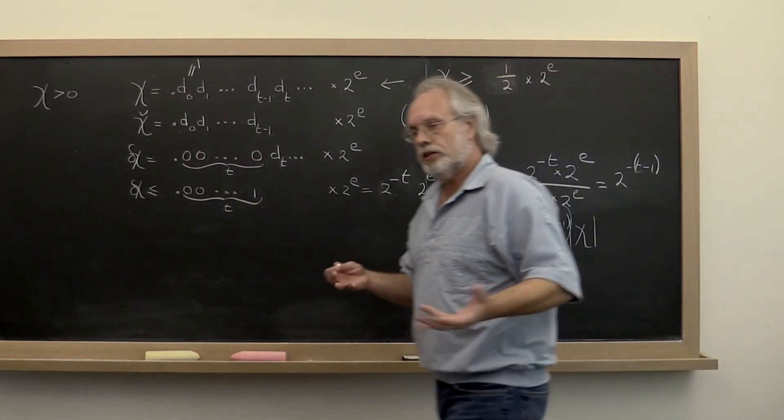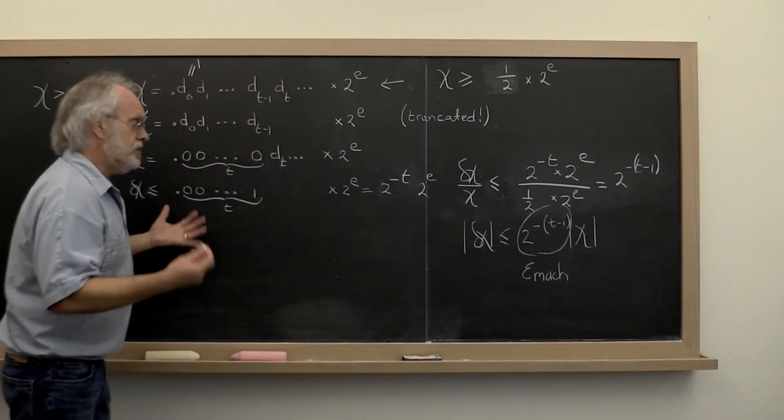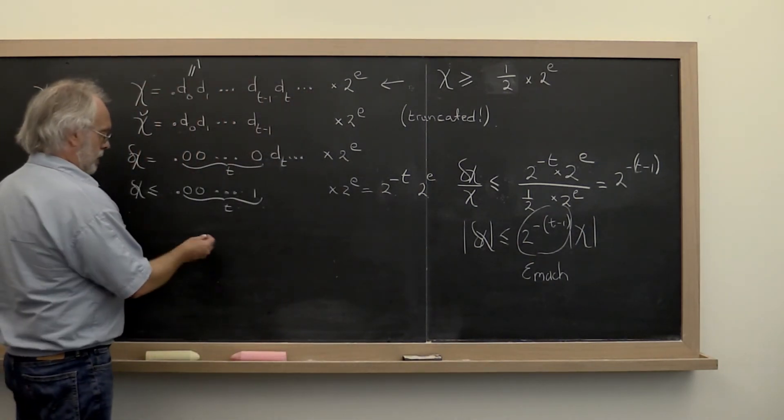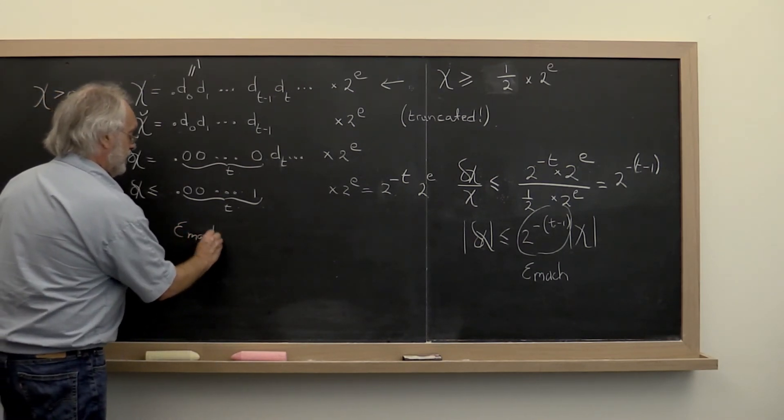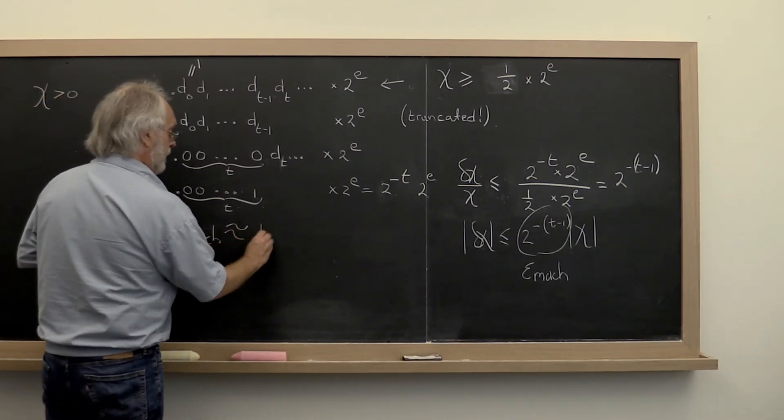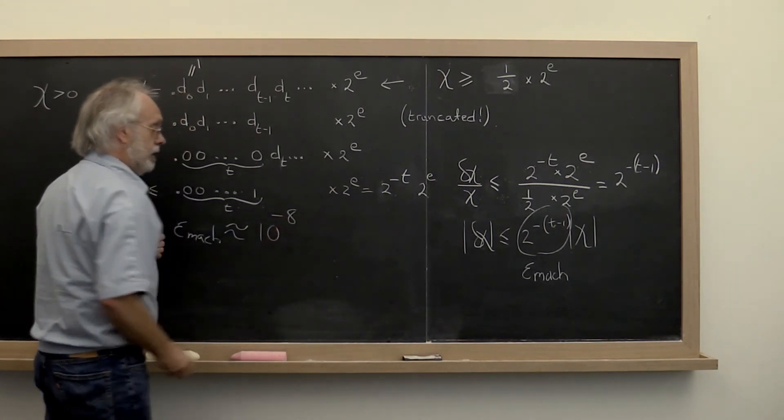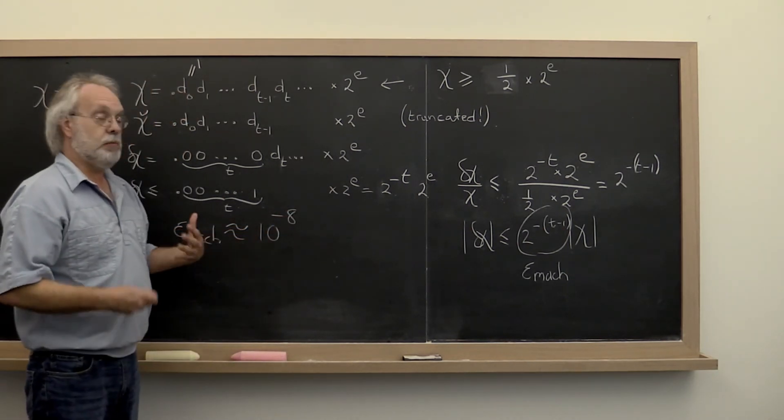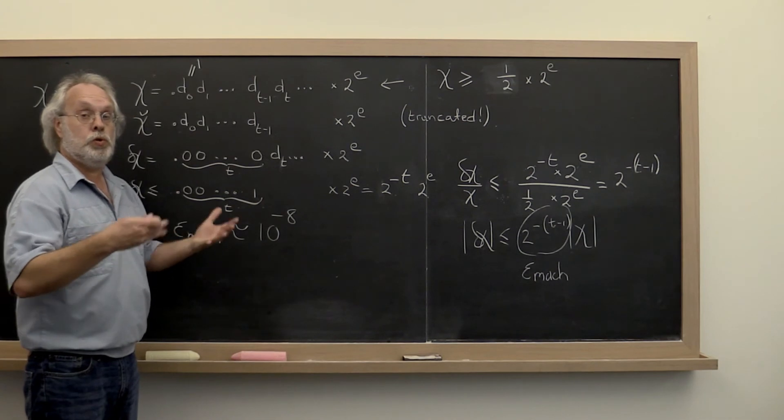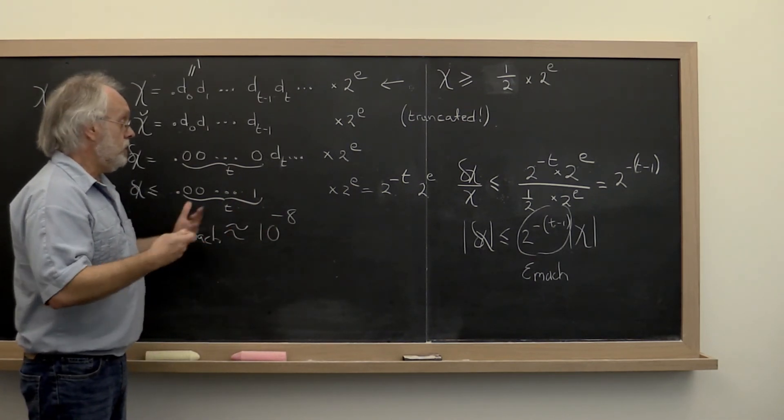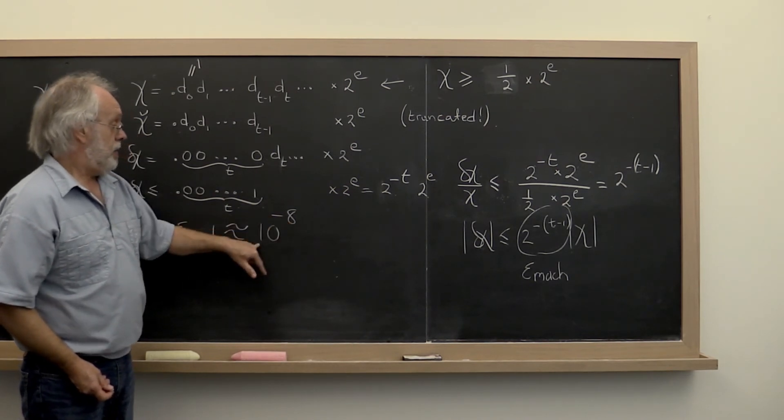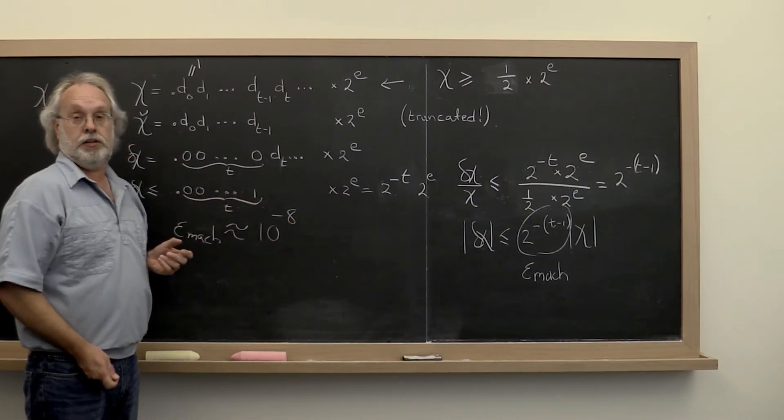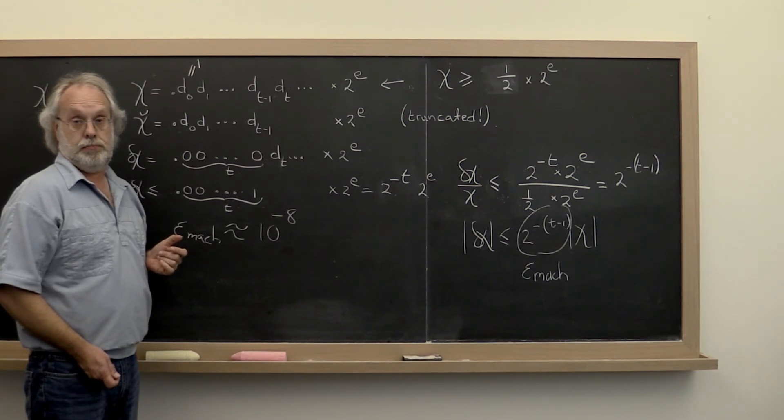So the machine epsilon characterizes the machine on which you work. And in particular it also characterizes what precision you're using. Because the machine epsilon for single precision is roughly 10 to the minus 8th. And what does that mean? That means that when you use single precision numbers, when you store them, you store roughly the first eight most significant decimal digits.